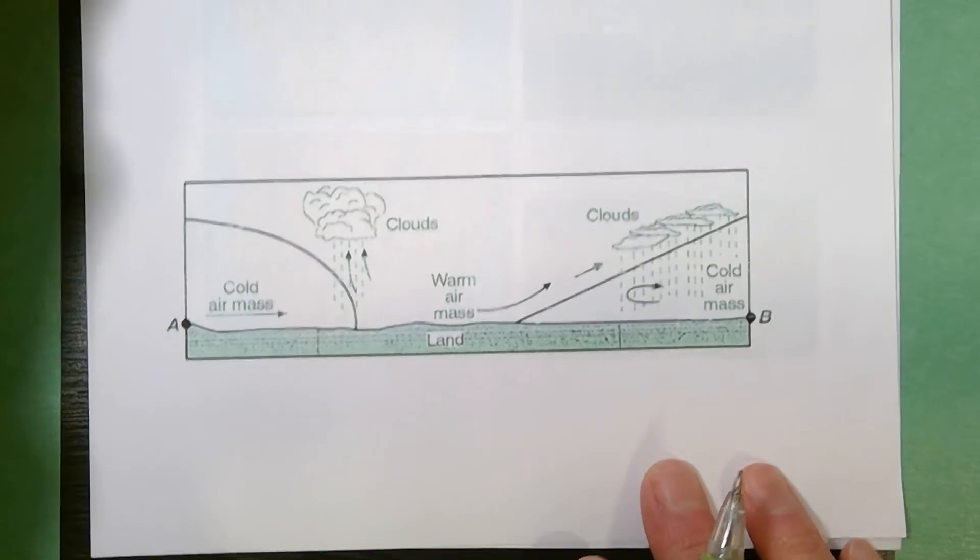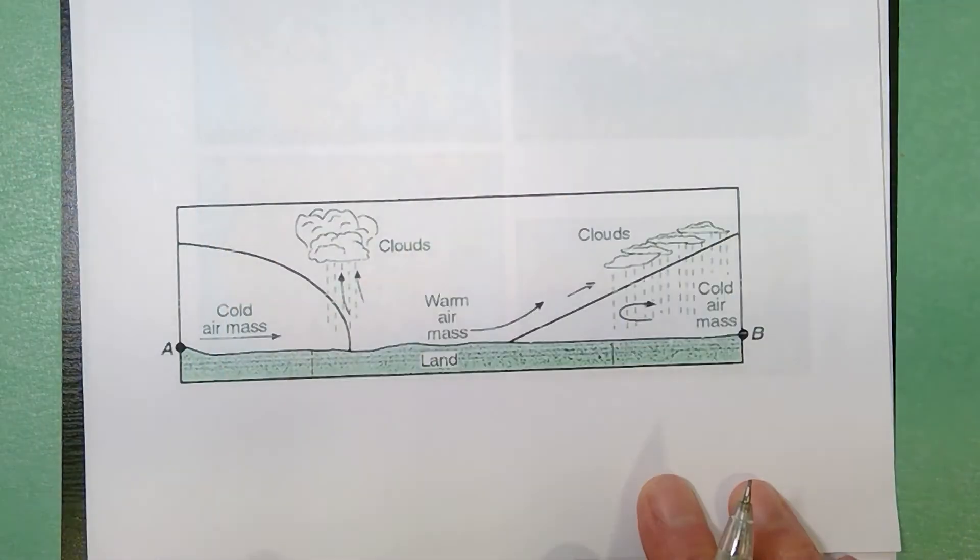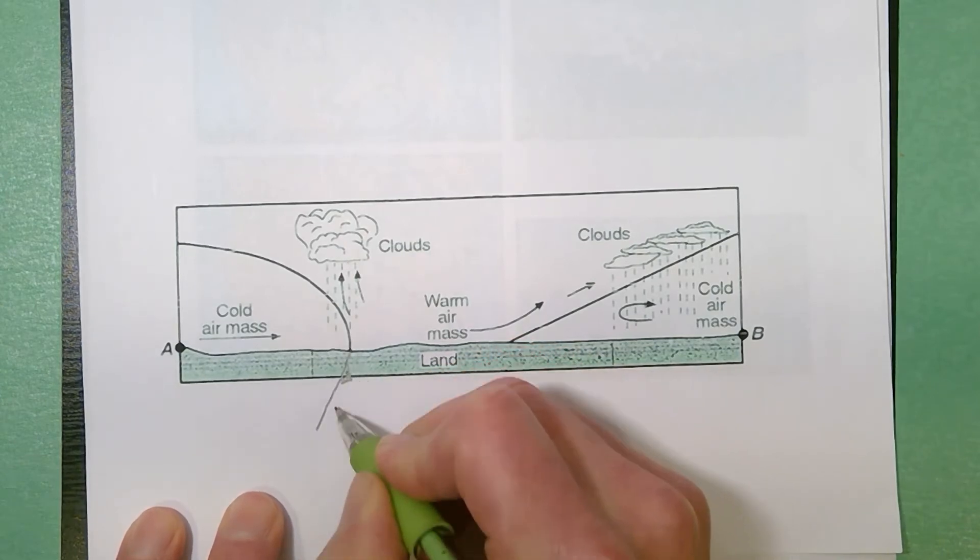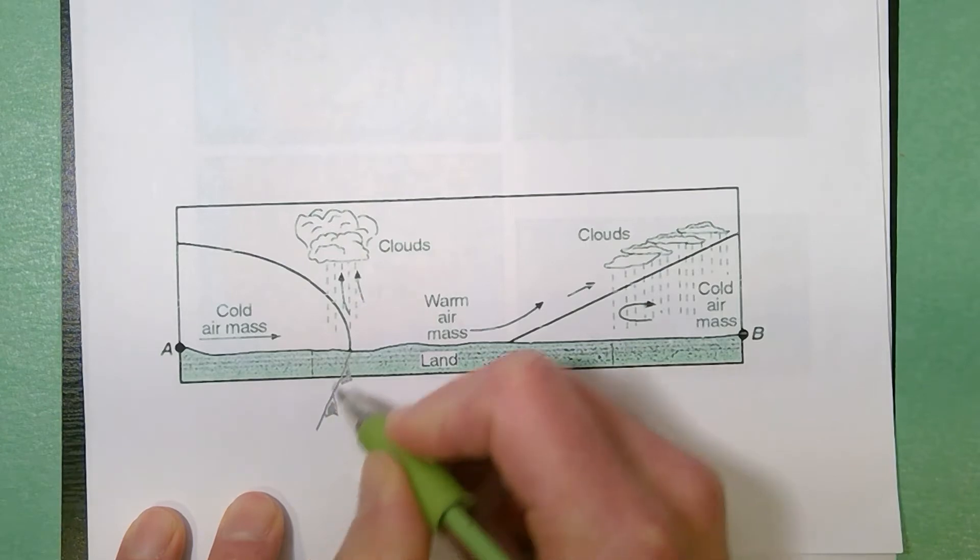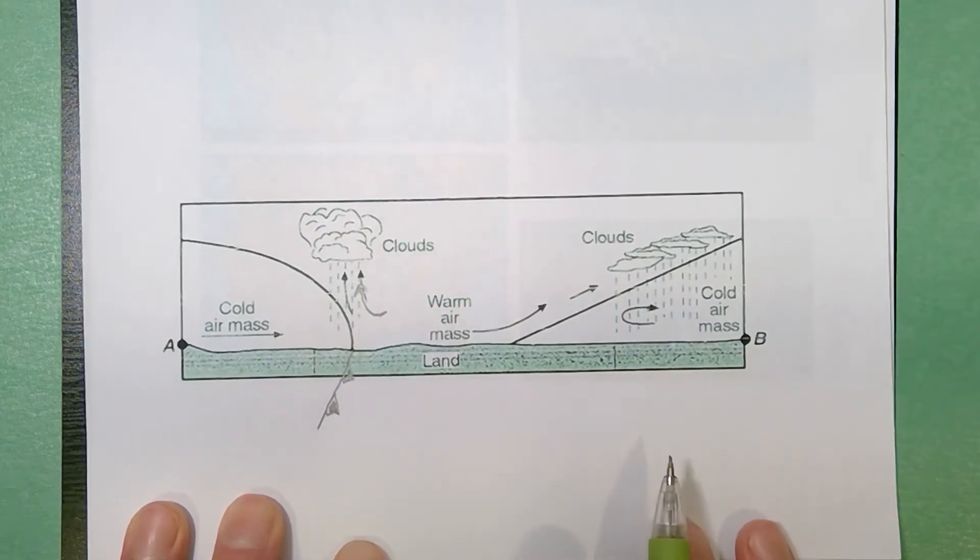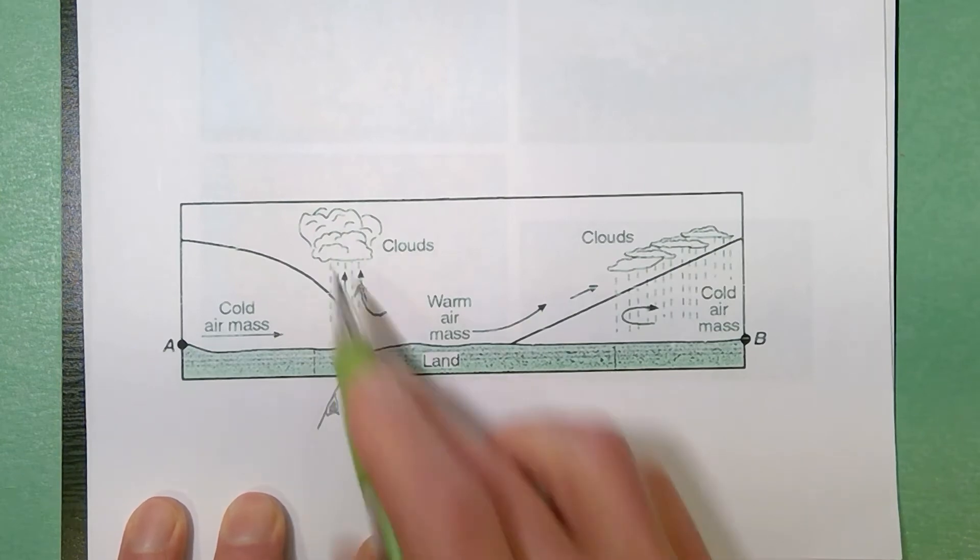This is another diagram from a different regions that shows you that exact same scenario. I've got a cold front. The cold front is forcing the warm air up forming the clouds at the edge, the leading edge of your cold front.